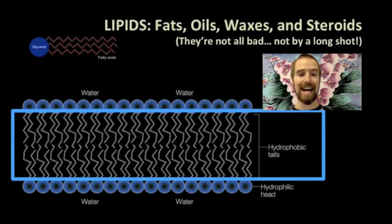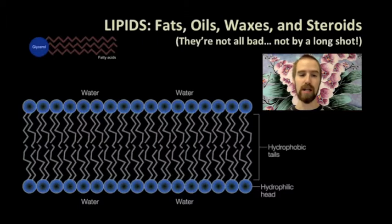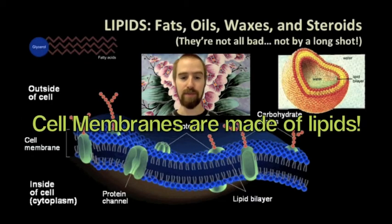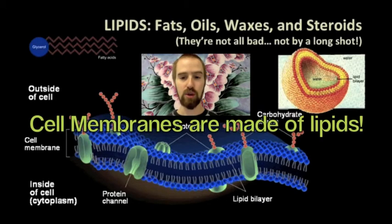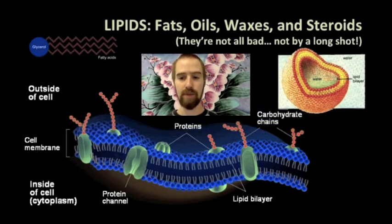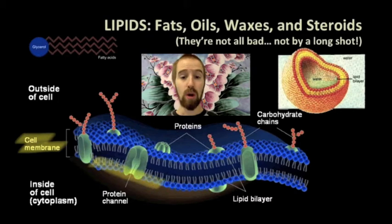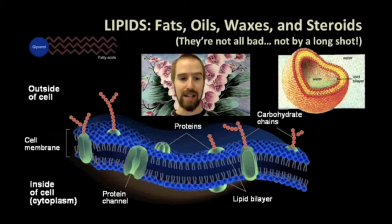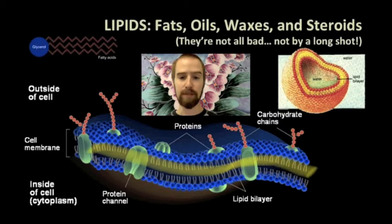This lipid bilayer is exactly how cell membranes are arranged. In this picture, we see a small section of a cell membrane, the flexible waterproof covering that surrounds every cell in our bodies. The glycerol heads of each lipid point either into the cell because the cytoplasm that fills the cell is made mostly of water, or they point out of the cell because the space between our cells is also filled with water. The fatty acid chains line up in the middle of the bilayer, helping to keep the cytoplasm in the cell and helping to keep other unwanted substances out.